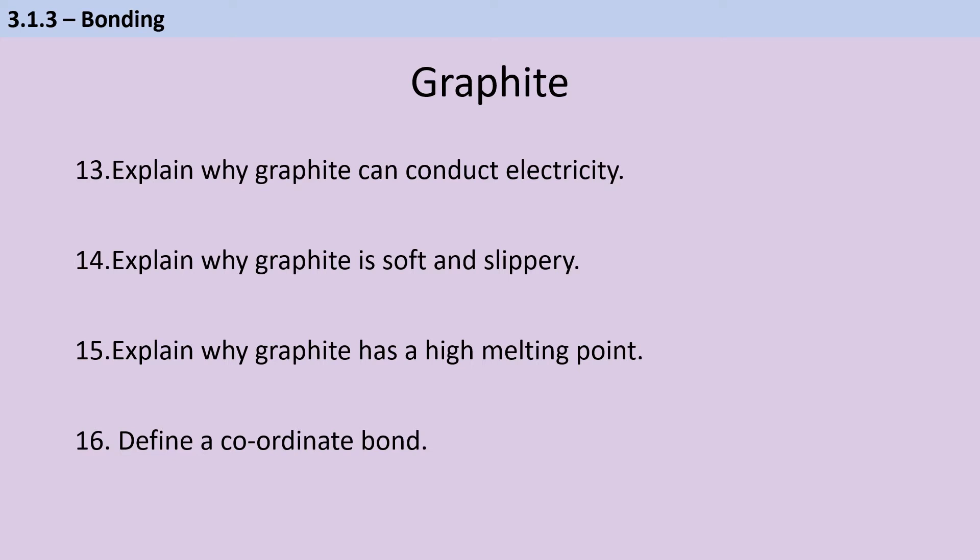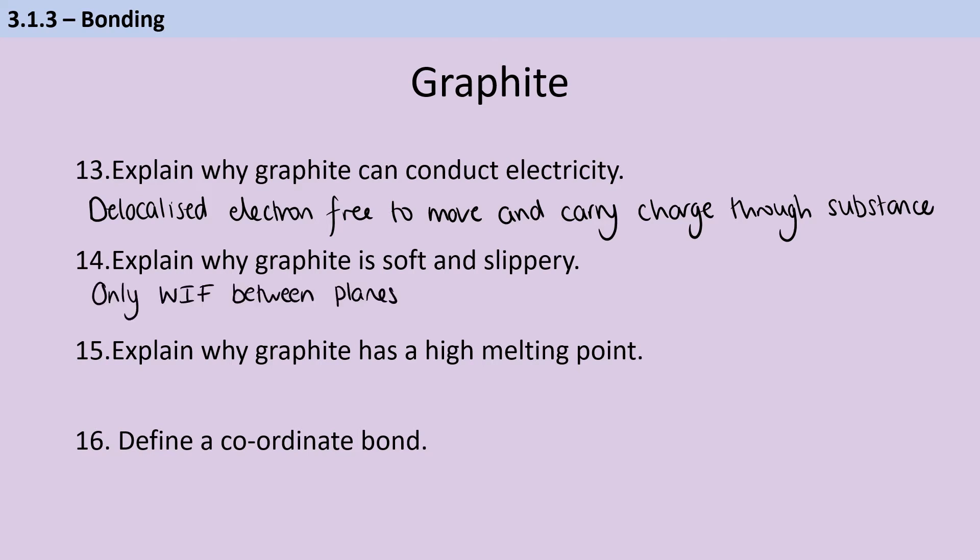Graphite conducts electricity because it, like a metal, has delocalized electrons. And these are free to move and to carry charge through the substance. It's soft and slippery because it's made of these planes or layers. And they're able to slide over each other because there are only weak intermolecular forces between them. It has a high melting point because it's a giant covalent substance or a macromolecular substance. And therefore, in order for it to be melted, we need to break a lot of strong covalent bonds. And because those strong covalent bonds are so strong, this requires a lot of energy.